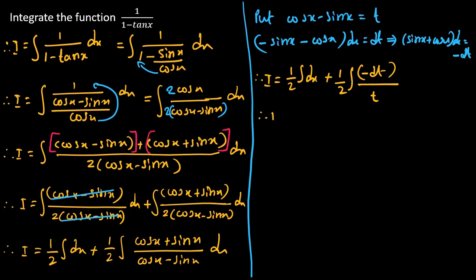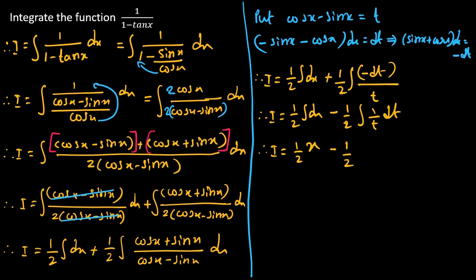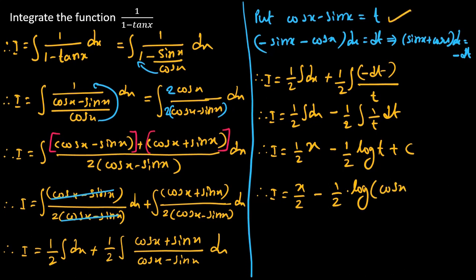Therefore, I is equal to 1 by 2 integration dx, minus 1 by 2 integration of 1 by t dt. The first integral with respect to x gives x, so we have 1 by 2 into x, minus 1 by 2 into log of t. Substituting back t equals cos x minus sin x, we get I equals x by 2 minus 1 by 2 log of (cos x minus sin x) plus C. This is the required answer.